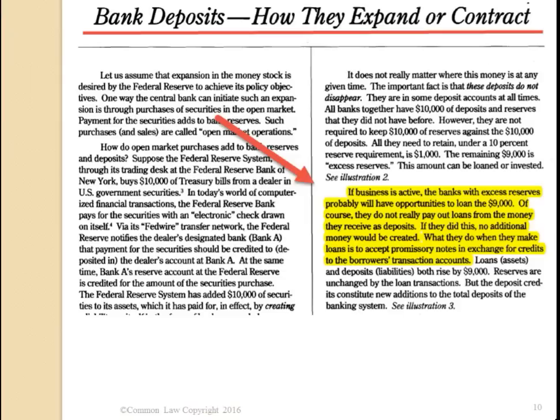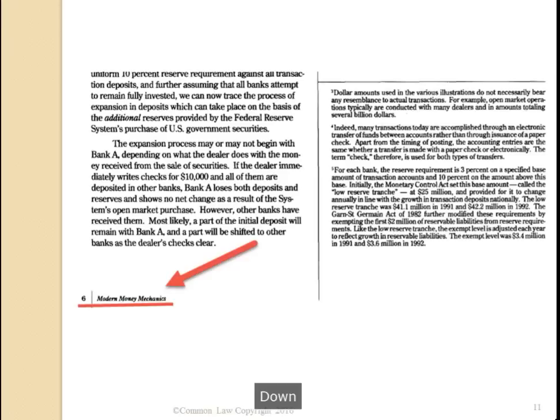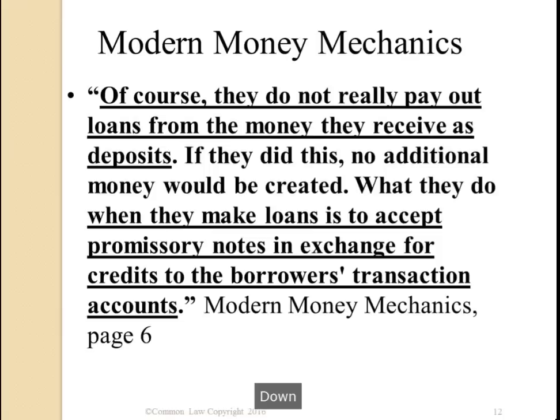If business is active, the banks with excess reserves probably will have opportunities to loan $9,000. Of course, they do not really pay out loans from the money they receive as deposits — if they did this, no additional money would be created. What they do when they make loans is to accept promissory notes in exchange for credits to the borrower's transaction accounts. So the borrower created the money. A bank is nothing more than a facilitator of credit.